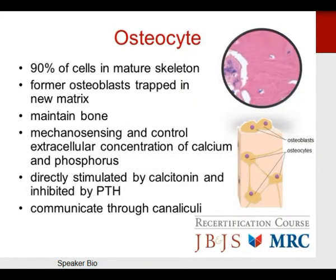The osteocyte is a mature bone cell that forms 90% of cells in the mature skeleton. These are former osteoblasts now trapped in the matrix. They maintain bone, have mechanosensing function, and control extracellular concentration of calcium and phosphorus. They are directly stimulated by calcitonin and inhibited by parathyroid hormone, and communicate with each other via canaliculi.